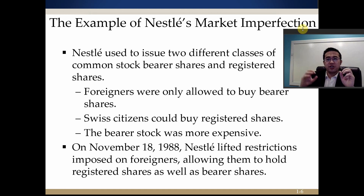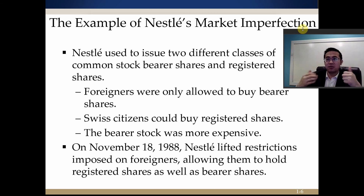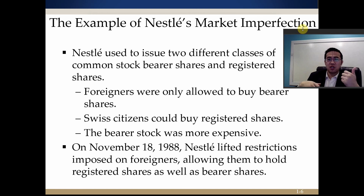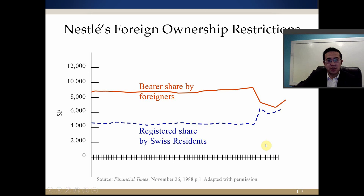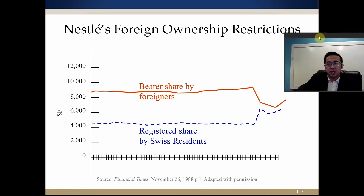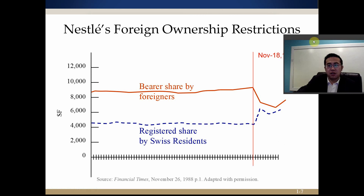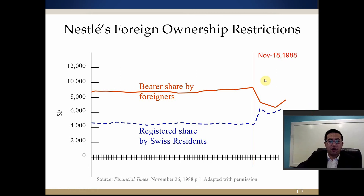Once the legal restriction was removed, both bearer shares and registered shares were treated equally in terms of cash claim rights — you buy stocks to get dividends and a share of ownership. So the Swiss citizen shares and the foreigner shares became the same. As a result, the prices converged to the same level. You can see that after the restriction was lifted, the registered share price held by Swiss residents and the bearer share price held by foreigners converged right at that point.